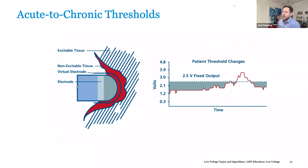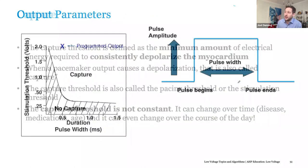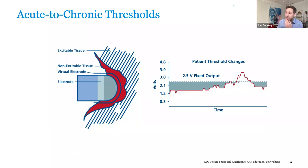One of the things we talked about here is acute to chronic thresholds. What you may see at implant is a threshold of, for example, 1.2 volts, but later on at follow-up the threshold may be exceeded and you're not actually capturing anymore. That is why we set a nice safety margin, but just keep in mind as you're navigating and implanting devices that initial implant thresholds don't necessarily determine long-term thresholds.